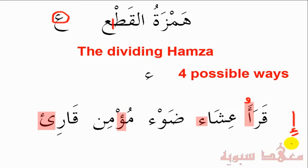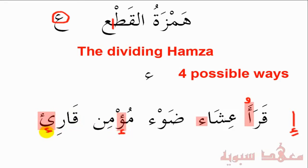Similarly with the Wao and the Ya'. A Hamza can be together with a Wao and a Ya' without the two dots. If these have a Dhammah, a Fathah, or even a Sukun, the Hamza will be written on top of the Wao and on top of the Ya'. However, in the case of a Kasrah, it will be written below — we'll have the Hamza below with the Kasrah.